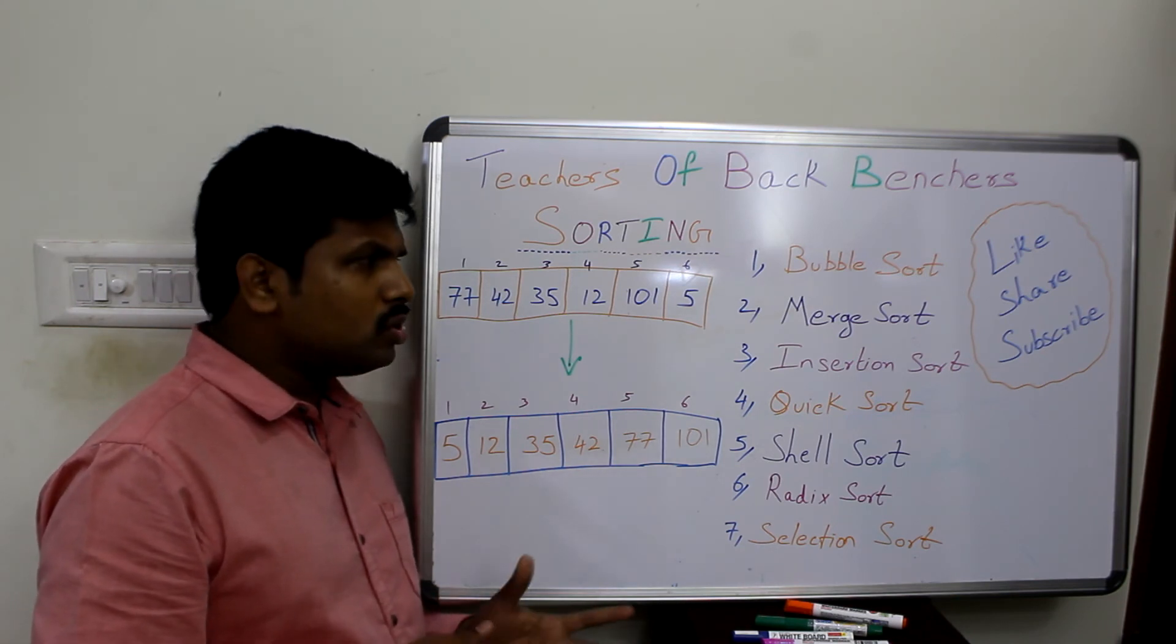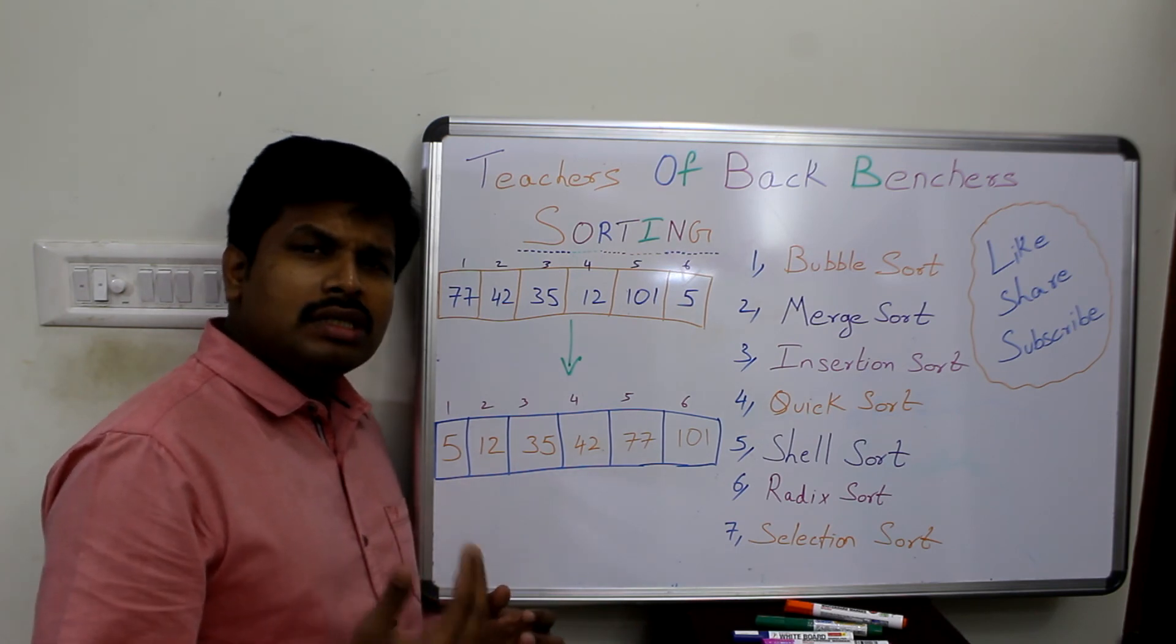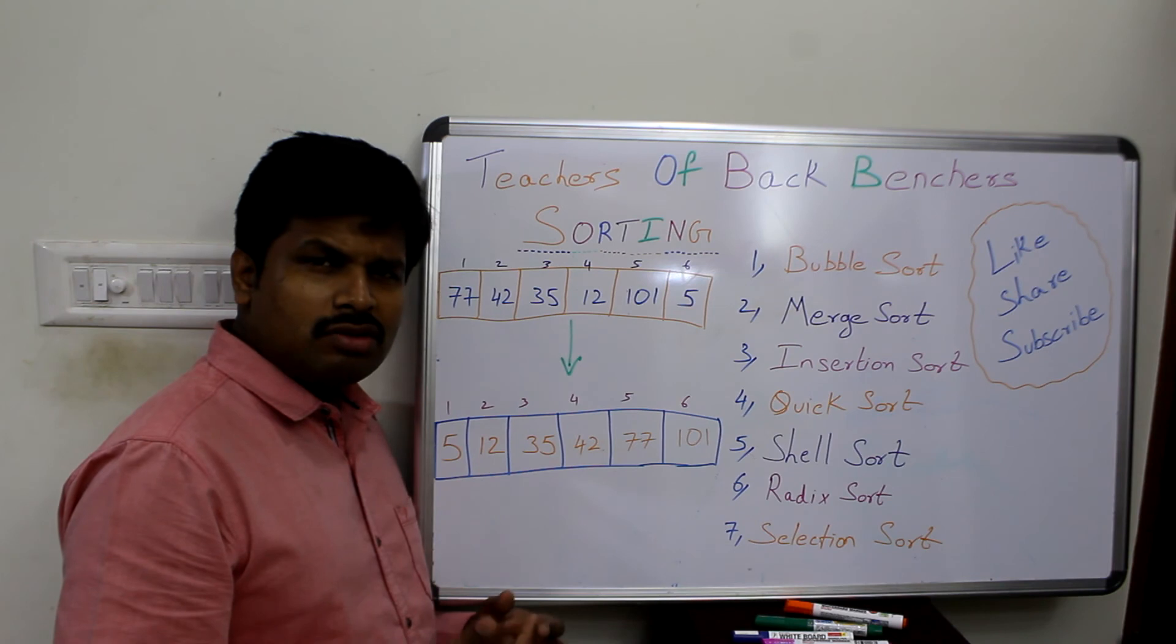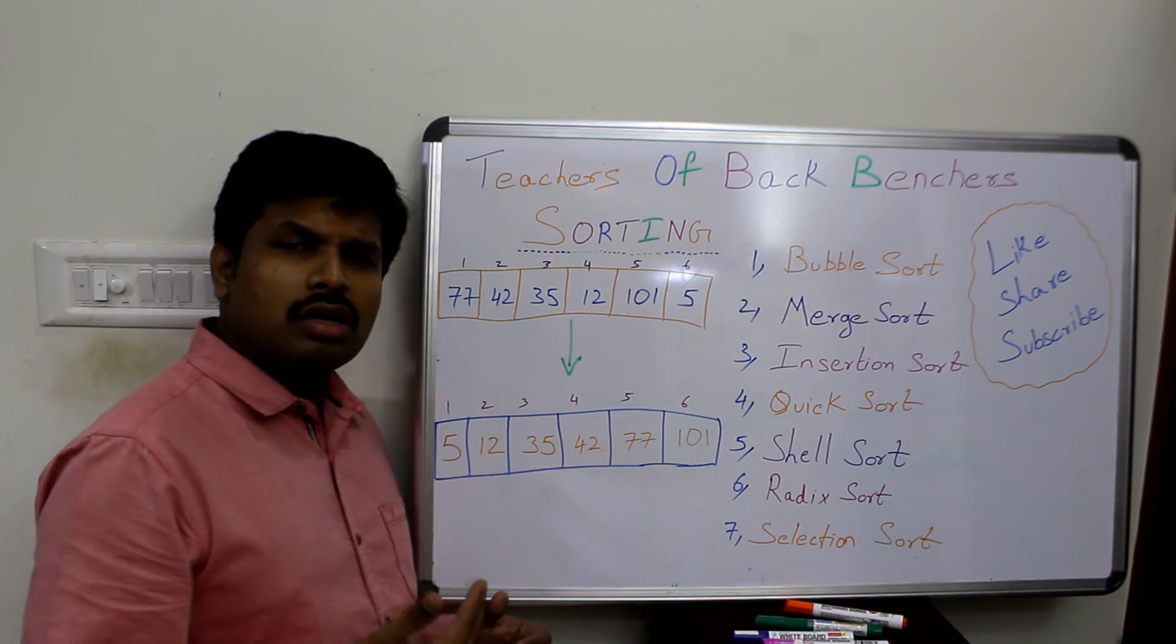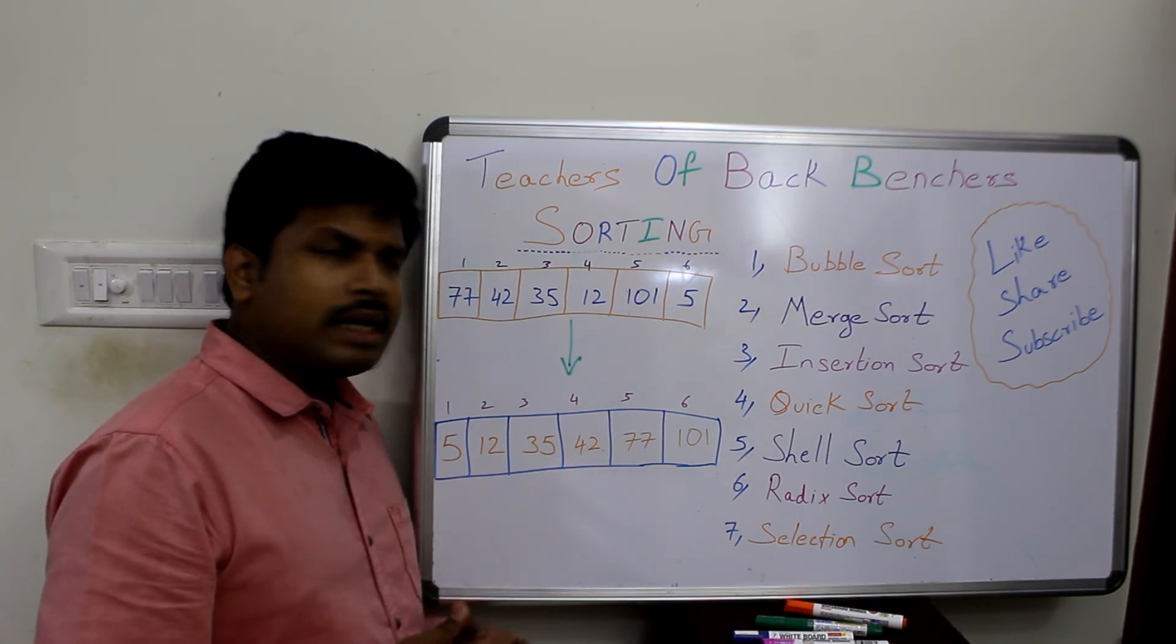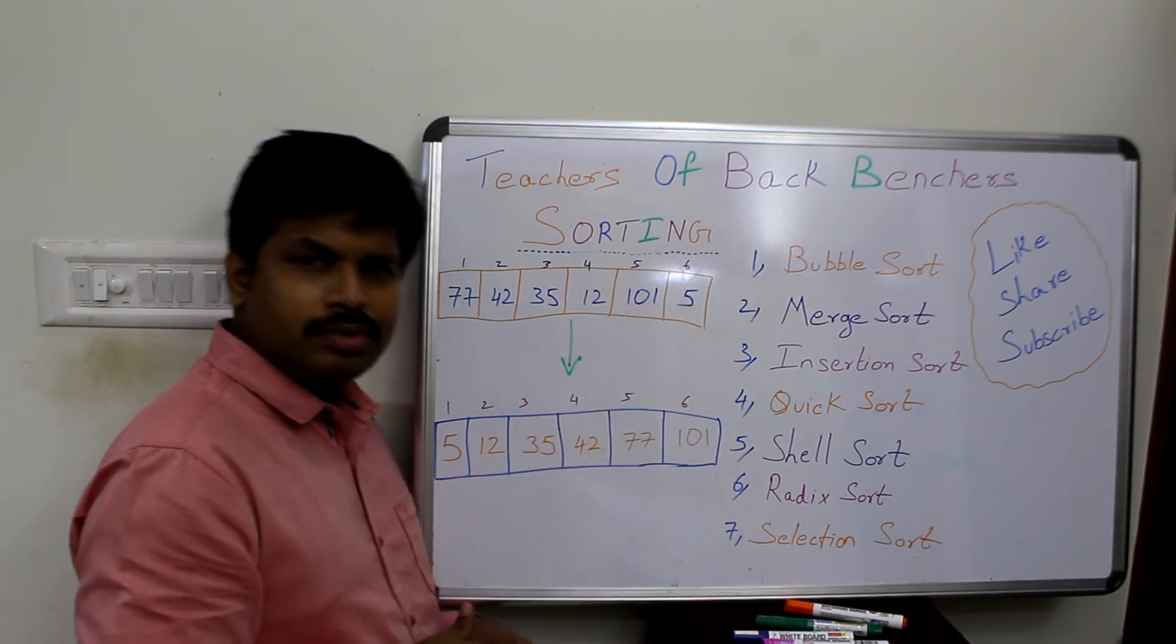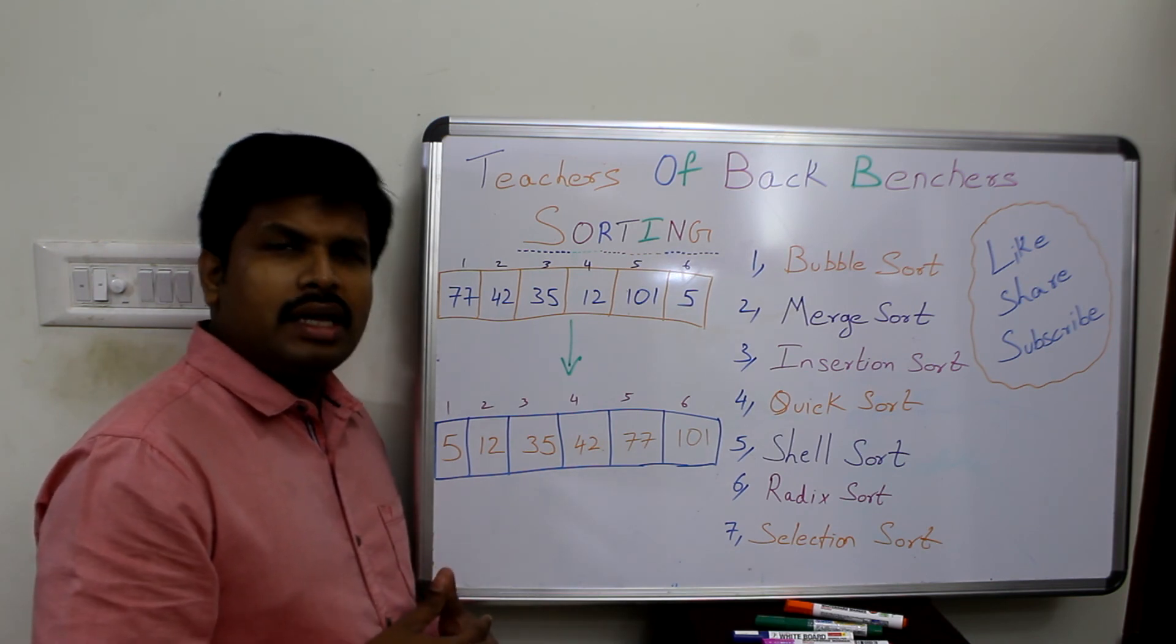What is sorting? Sorting is nothing but getting a jumbled set of series of numbers and sorting it together in ascending order or descending order. This process is called a sorting technique. These are its types.